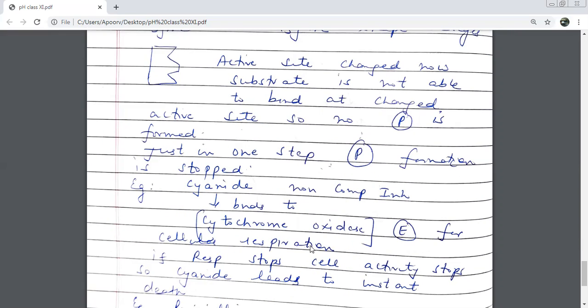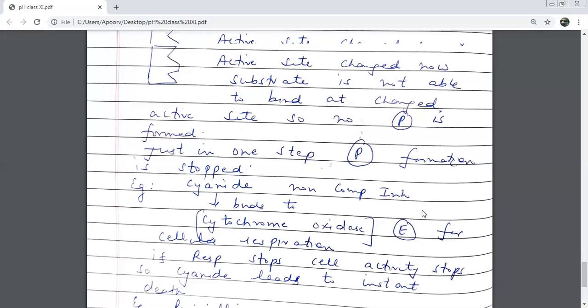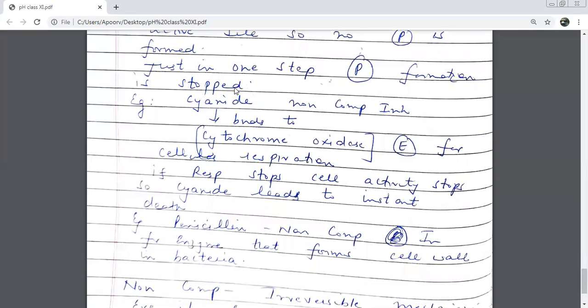Basically, it is involved directly in cellular respiration. So which is the inhibitor which binded to this enzyme? Cyanide. And the first effect will be that cellular respiration will stop. And this is just in one step. And as soon as the respiration is going to stop, cyanide is going to lead to instant death.